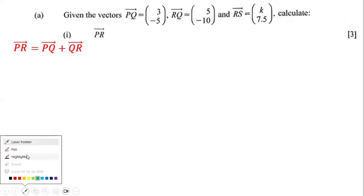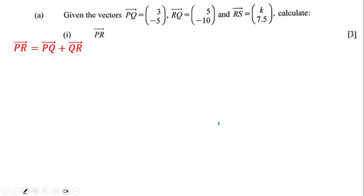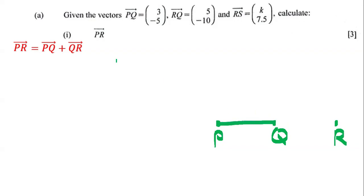Someone may ask how we can visualize that. Imagine you have a starting point P and an ending point R, and you want to go from P to R, but you have an intermediate point in the middle — call it Q. In order to get from P to R, you have to go from P to Q, which is why we have PQ, and then from Q to R, which is why we have QR. So PR is equal to PQ plus QR.